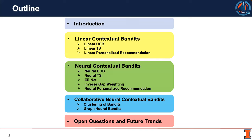We will start with the introduction to elaborate on how we shall use the neural contemporal boundaries for personalized recommendation. Then we go through the linear contemporal boundaries and motivate the neural contemporal boundaries to show how the neural network benefits the contemporal boundaries for personalized recommendation. We will also review the new direction of collaborative neural contemporal boundaries, and discuss the emerging challenges and future trends in the end.